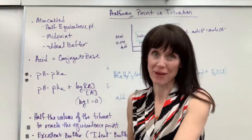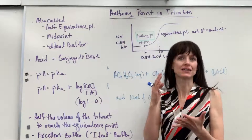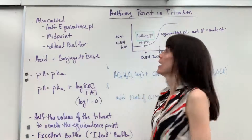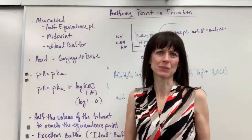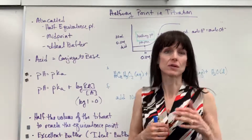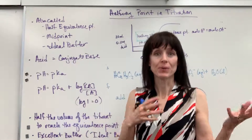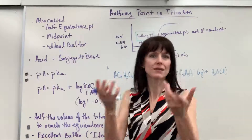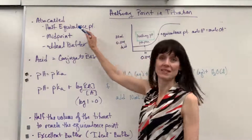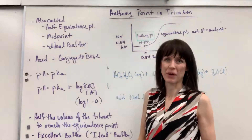We're going to talk about the halfway point for titrations. A halfway point really is our ideal buffering region — it is the best buffer that we can have. The halfway point is called different things in different textbooks. So I want to give you these other words: the halfway point can also be referred to as the half-equivalence point, the midpoint, or the ideal buffer.